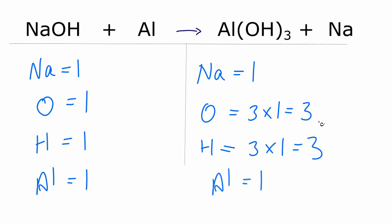So the only thing that's not balanced are these oxygens and hydrogens over here on the reactant side. If I wanted to have three oxygens or three hydrogens, I need to put a three as my coefficient in front of the NaOH.